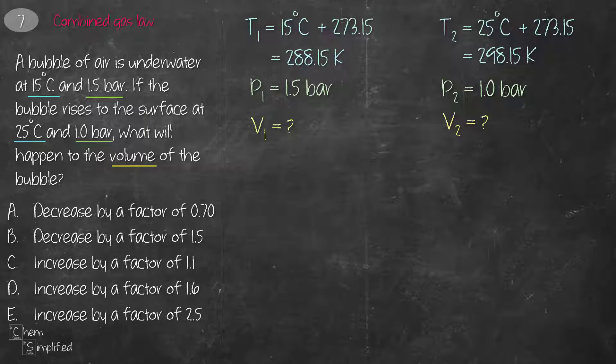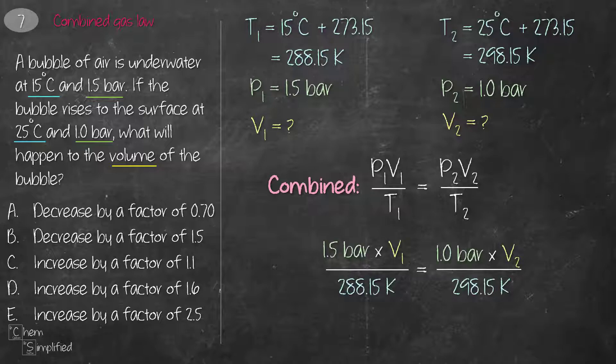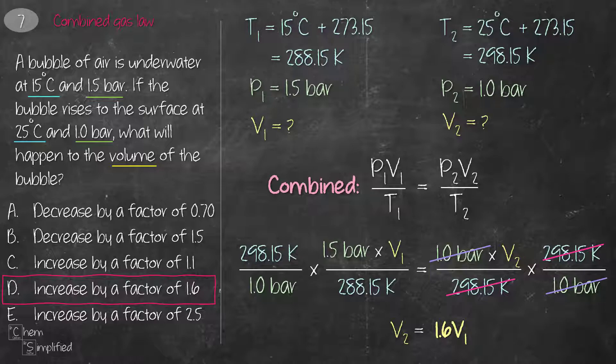Based on what we have, we know that pressure, volume and temperature changes. That means this involves combined gas law, which is P1V1 over T1 equals P2V2 over T2. We plug in all the information that we have. To answer what happens to the volume of the bubble, we're going to solve for V2, and we're going to do a little bit of algebra, and that gives us V2 is 1.6V1. What that means is the new volume increases by a factor of 1.6 compared to the previous volume.